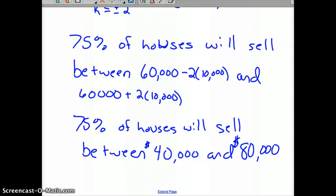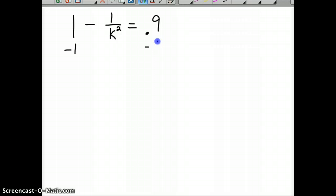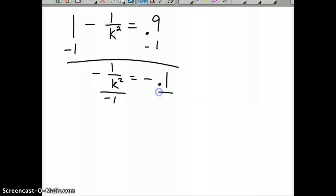And that's kind of the one that comes out even. But what if you wanted to know more? Let's say I want to be 90%. I want to know what 90% of the houses are going to sell for in this particular community. So that requires another application to that formula. So 1 over 1, Chebyshev's formula, 1 over 1 minus 1 over k squared would equal 0.9 for 90%. Again, subtract 1. And so negative 1 over k squared equals negative 0.1.